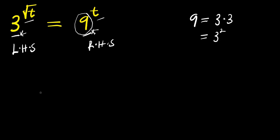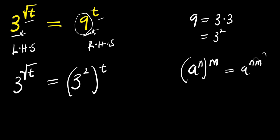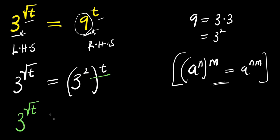We replace 9 with 3 to the power of 2. So we have 3 to the power of square root of t, equals 9 which is 3 to the power of 2, and this is raised to the power of t. Now if you have a to the power of n raised to the power of n, it equals a to the power of n times n. Applying this identity, we multiply the exponents and we get 3 to the power of square root of t equals 3 to the power of 2t.